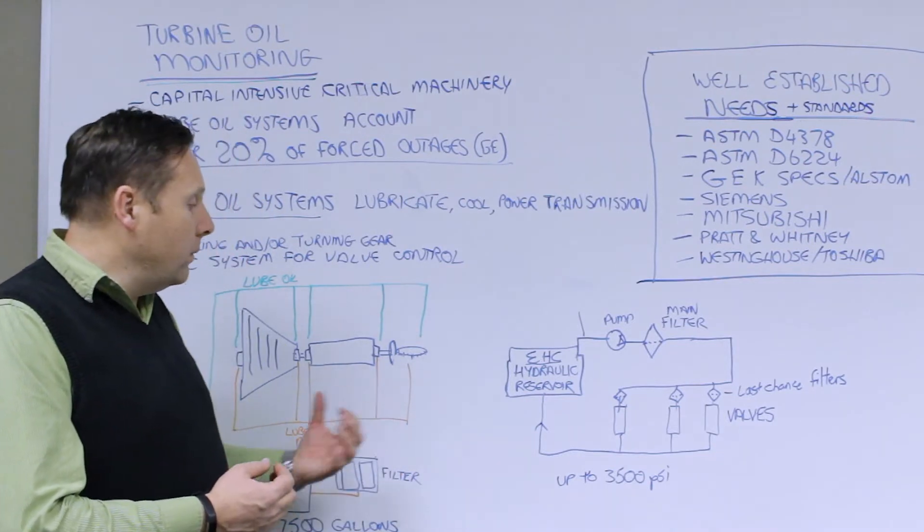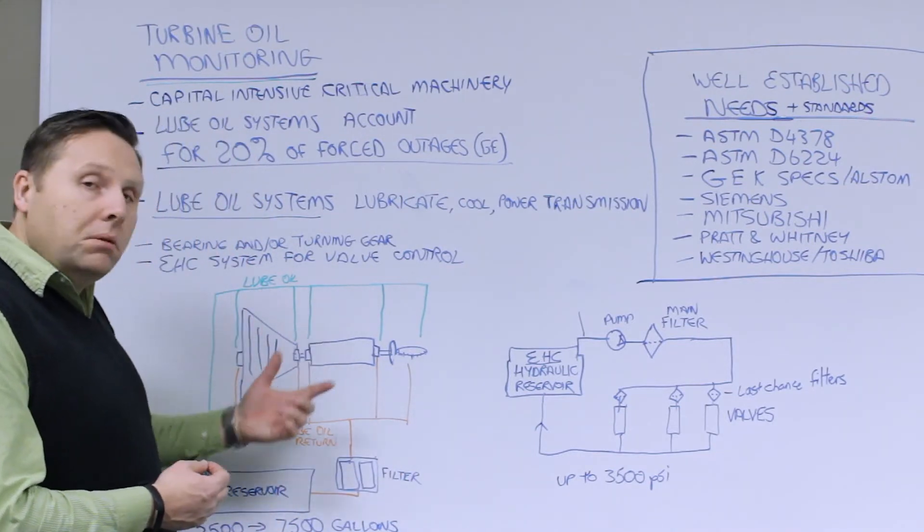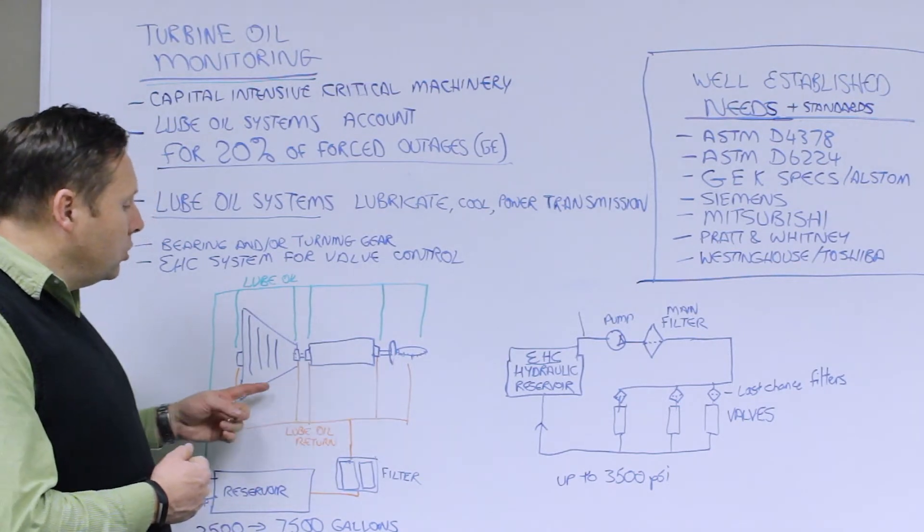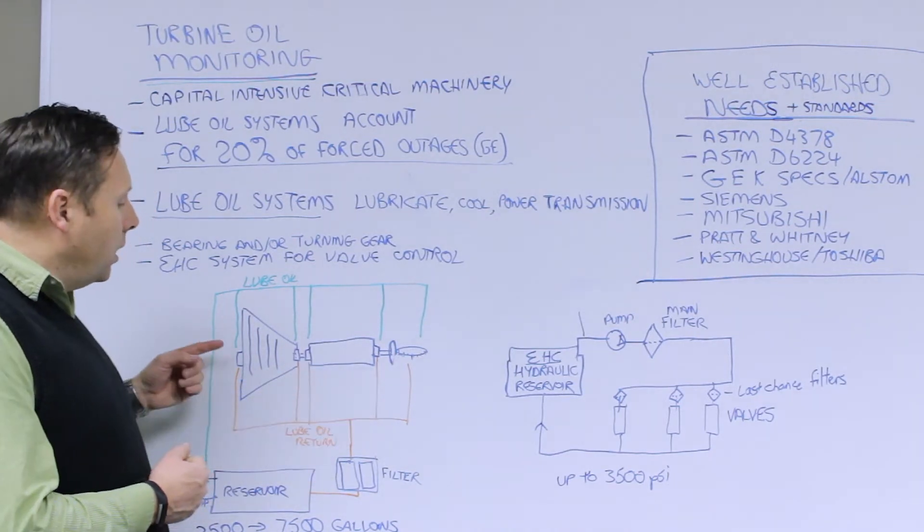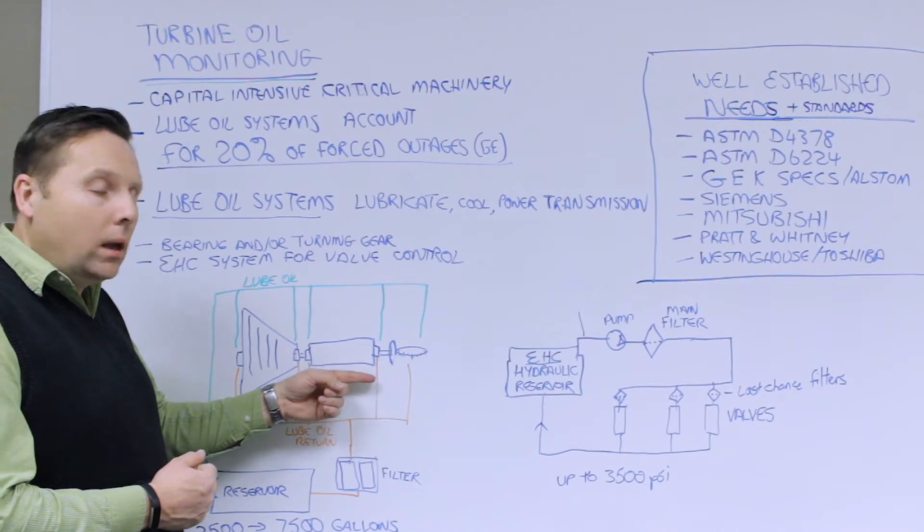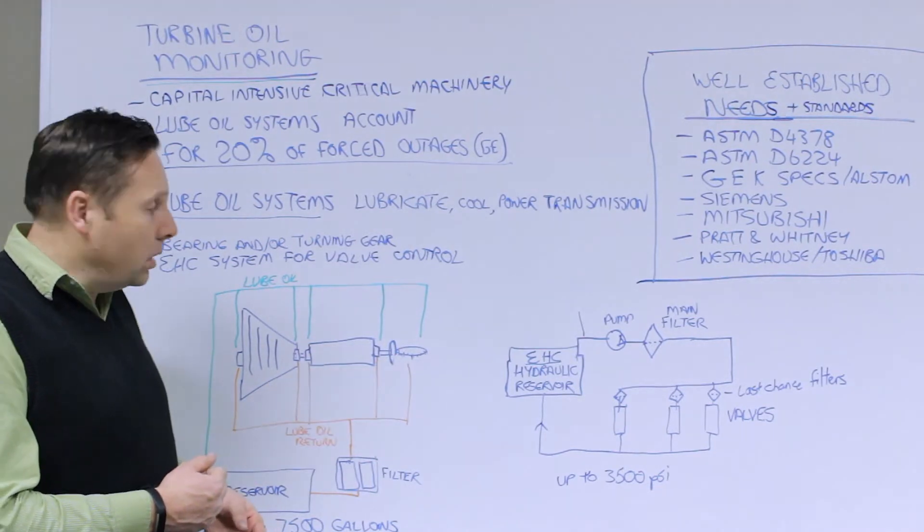Why is that important? Well, if we look at a loop system here for a generic steam turbine system, what we have here essentially are a whole series of bearings both on the shaft and on the generator side as well as maybe on the turning gear.